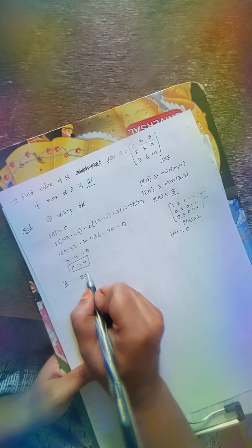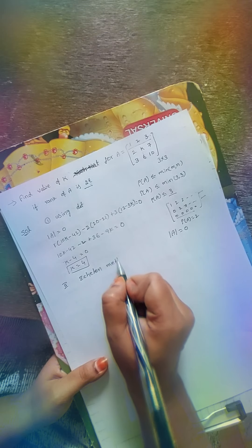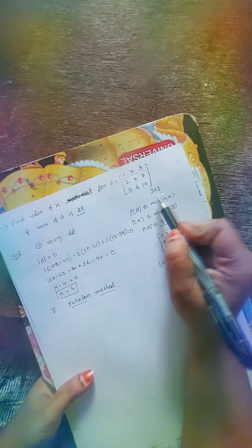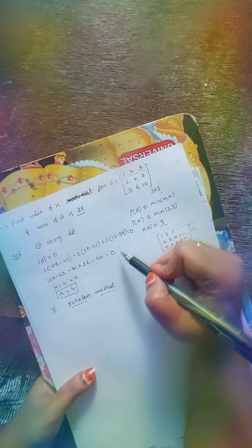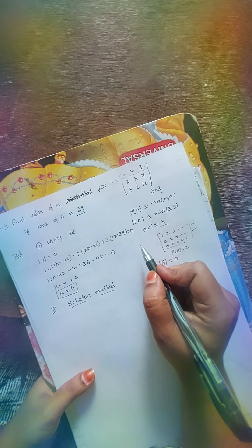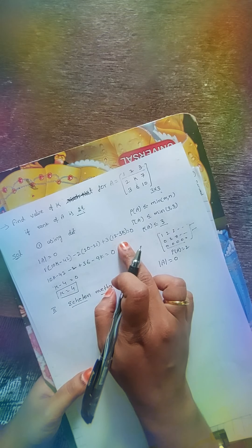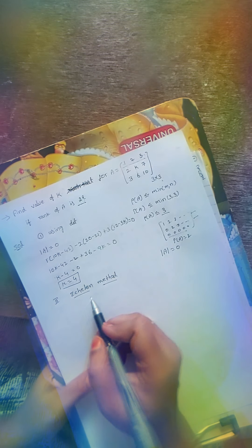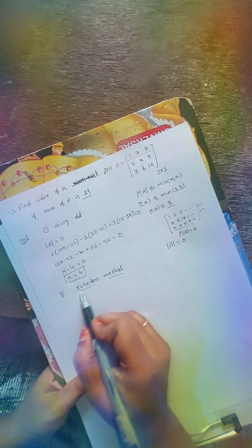Now for the second method — the echelon form method. The reason we need this method is that finding the determinant becomes very difficult as the matrix order increases. For a 4×4 matrix, you need to find four 3×3 minors and compute each determinant. For 5×5 it becomes even more cumbersome. So we use the echelon form method as an alternative to find the value of k.